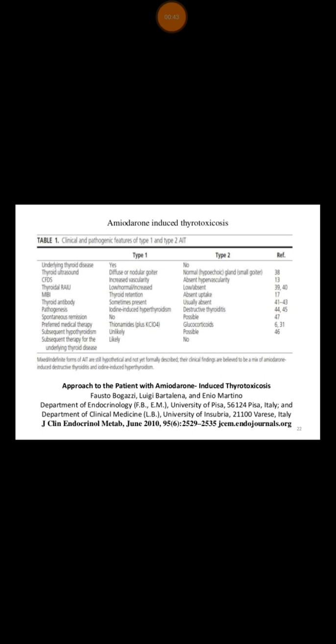When we talk about amiodarone-induced thyrotoxicosis, we divide it into Type 1 and Type 2. Type 1 is iodine-induced thyrotoxicosis, and this condition basically happens in people who have iodine deficiency. In Type 2, we call it destructive thyroiditis, and this is due to the direct destructive effect of iodine on the thyroid gland.